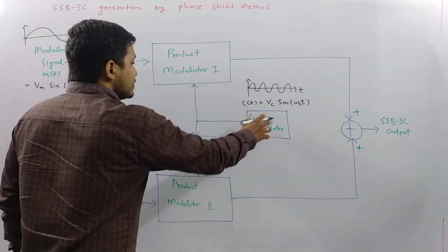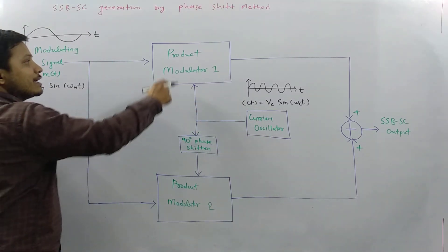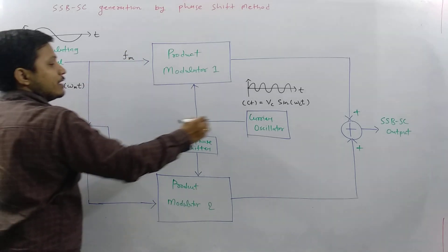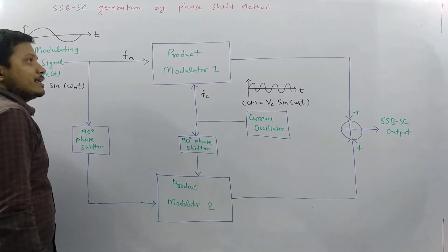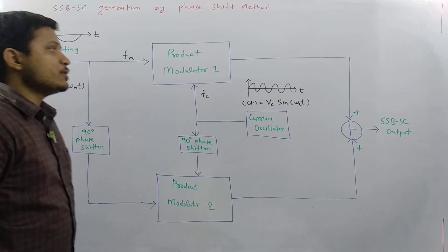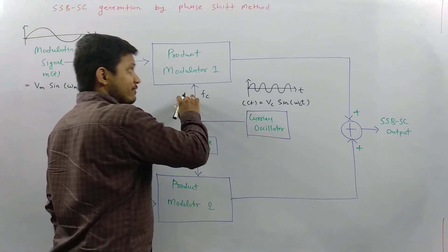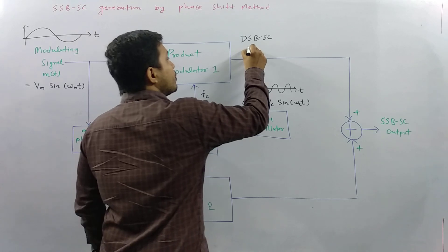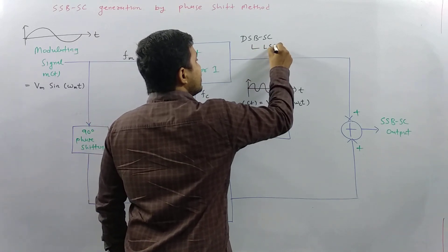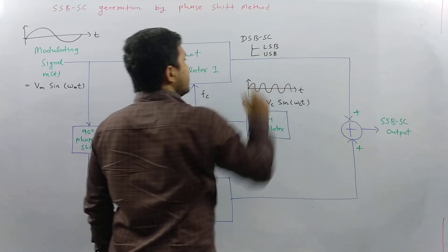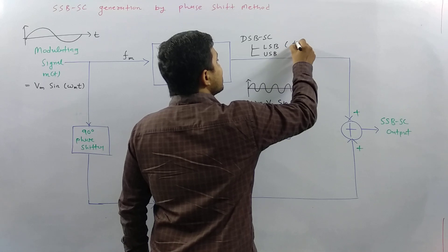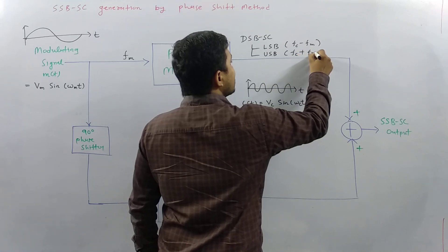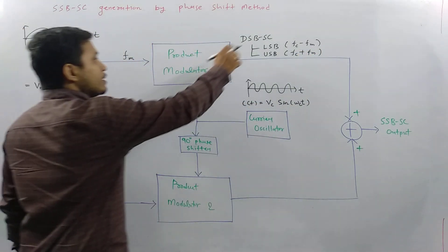The carrier signal and modulating signal are directly given to product modulator 1, where the modulating signal has frequency Fm and the carrier signal has frequency Fc. Once you pass these two signals to product modulator 1, it generates a DSBSC signal having two components: a lower sideband (Fc minus Fm) and an upper sideband (Fc plus Fm).